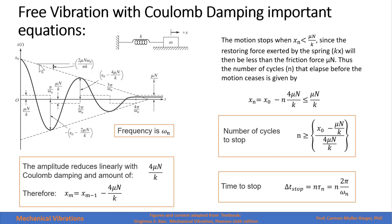You can see it here in the graph. So this magnitude will be 4μN/k less than this. Frequency of motion will be ωₙ. The motion will stop at xₙ, which is less than μN/k.